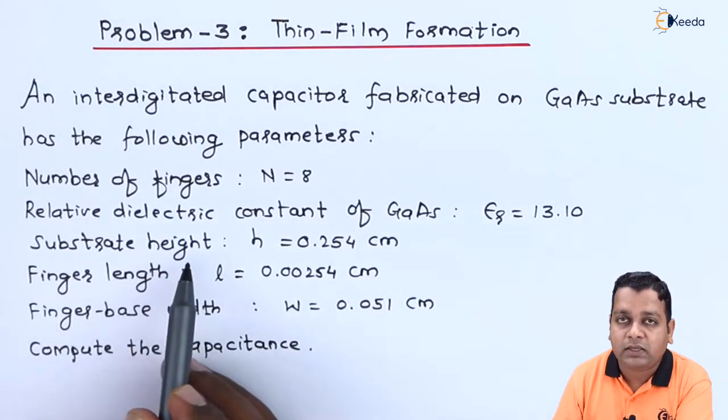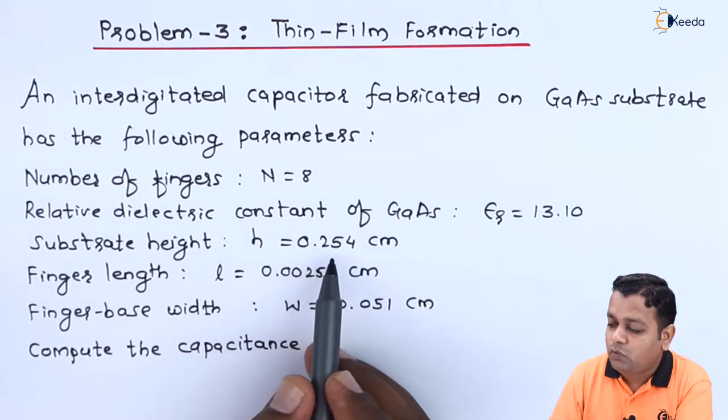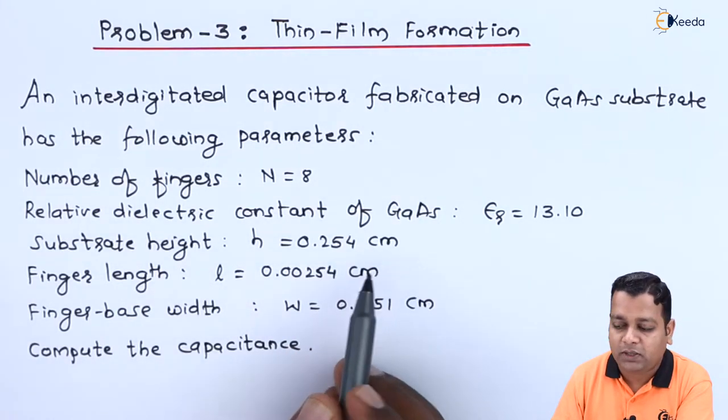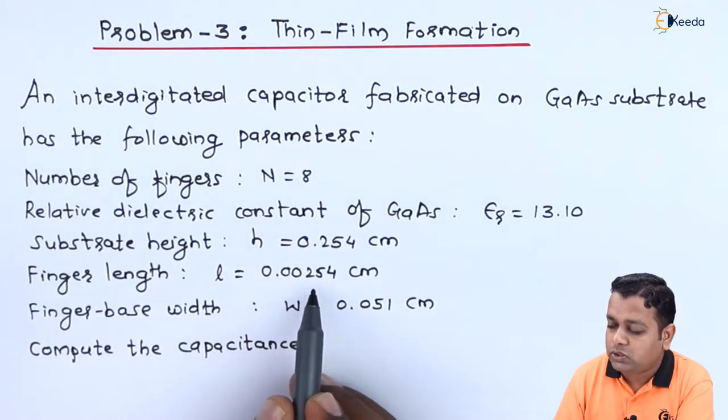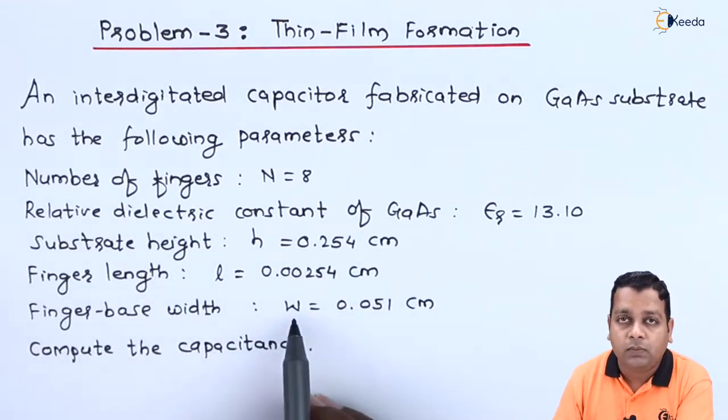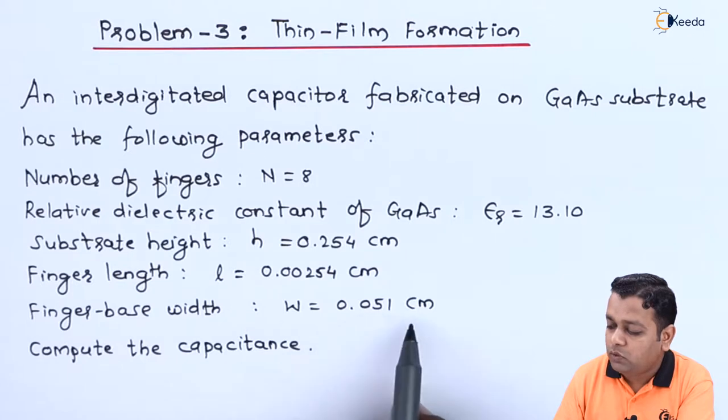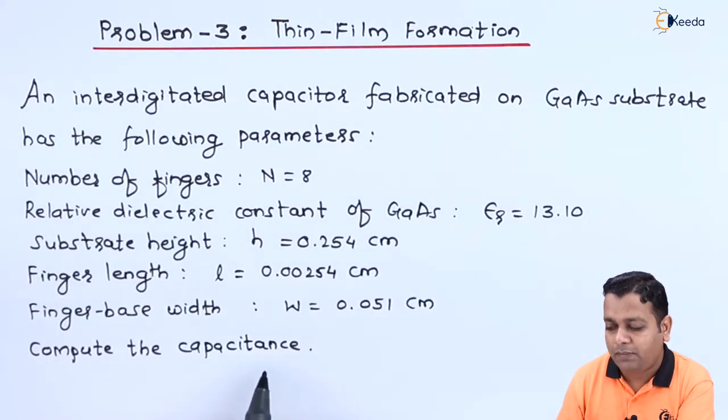The substrate height is denoted small h and holds the value 0.254 centimeters. We have the finger length L is equal to 0.00254 centimeters. The finger base width W is equal to 0.051 centimeters. We are asked to make computation for the capacitance here.